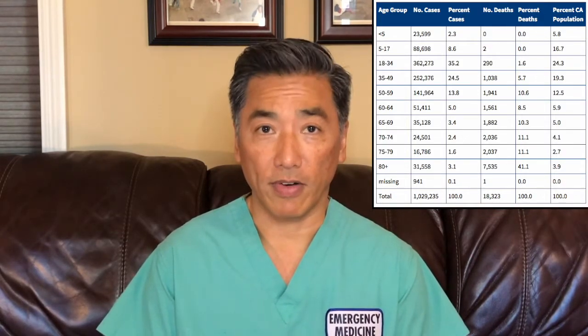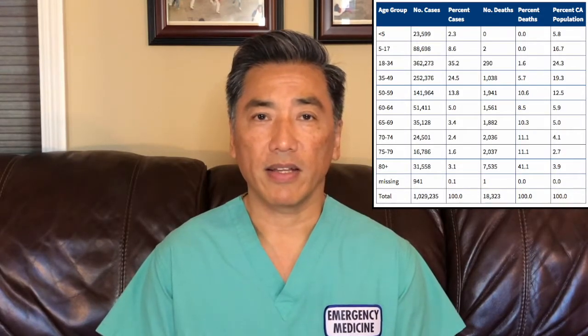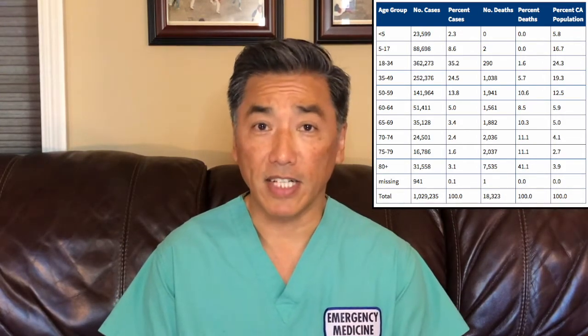If you look at people under 35 years old, that percentage of deaths out of the total is going to be much less than 1%. If you look at the group between 50 and 79 years old, in those decades, each decade or so makes up anywhere between 8% to 11% of the total deaths. So for people between 50 and 79 years old, that makes up about half of the COVID-19 deaths.